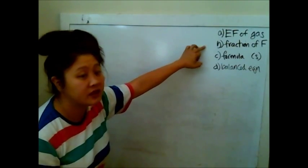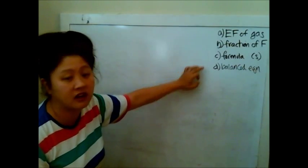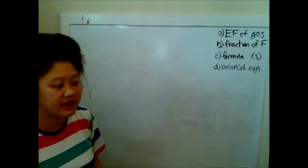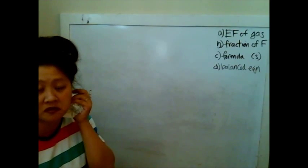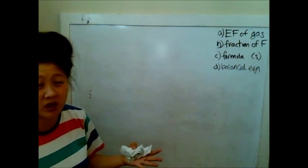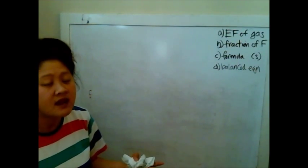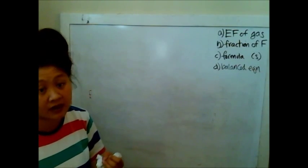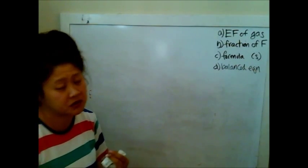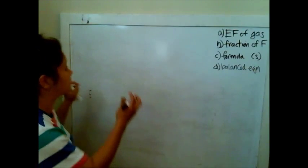So the empirical formula, the fraction of fluorine, the formula of the solid, and the balanced equation. And then I would always suggest that when you're reading a problem like this, especially a long one where it's kind of easy to get lost, that you read through the problem and either you diagram or you translate and balance for yourself so that you can keep track of everything that's going on.